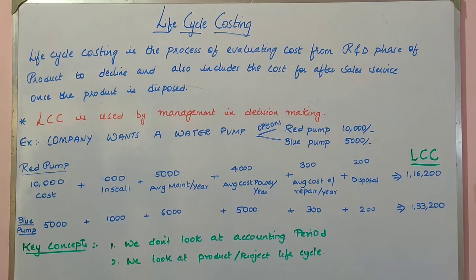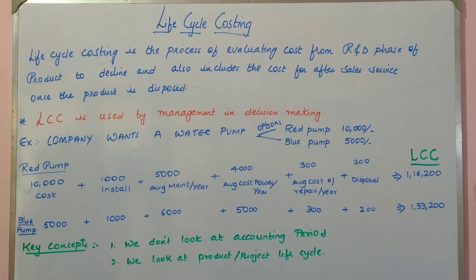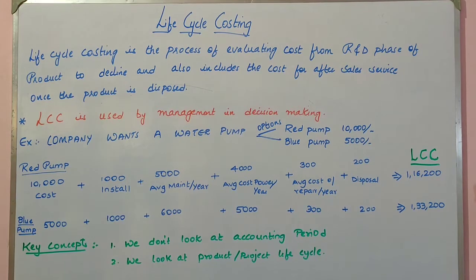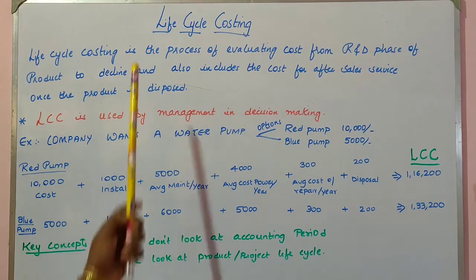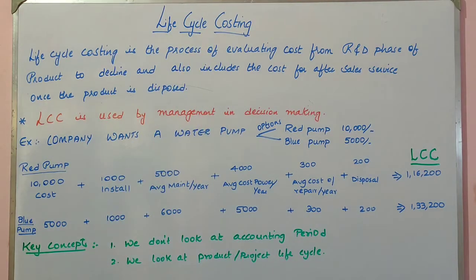Life cycle costing is a process of finding out the cost by analyzing the life cycle of a product. A product or project generally passes through different phases. When you evaluate the cost of a product or project on the basis of the different phases it involves, it is termed as life cycle costing.